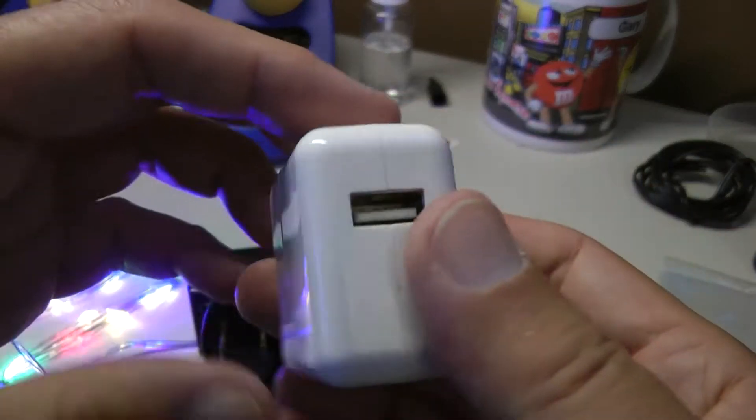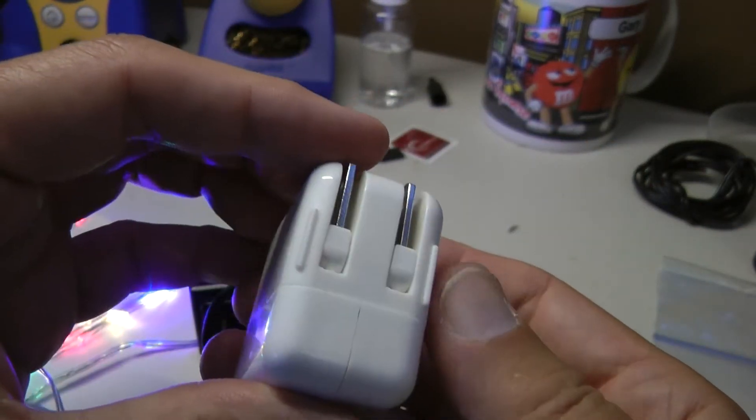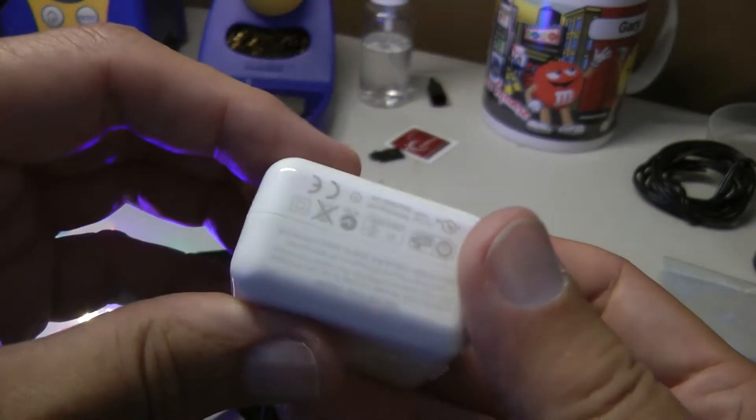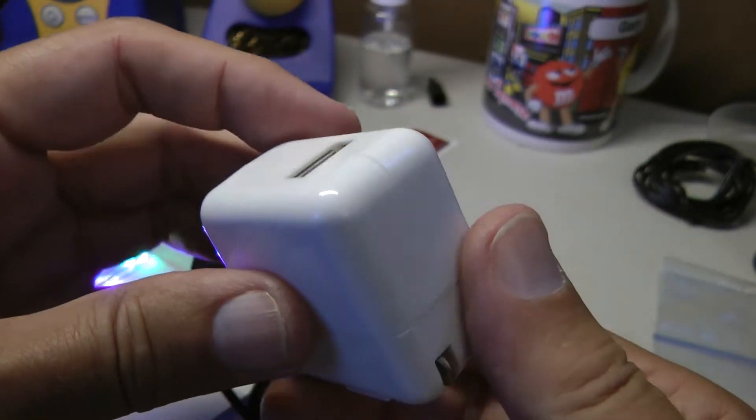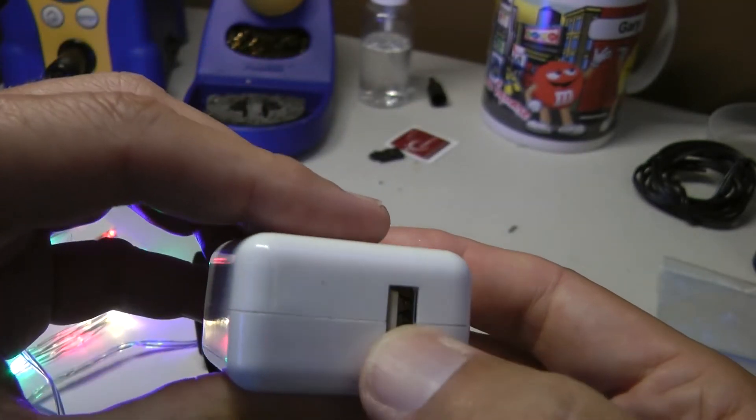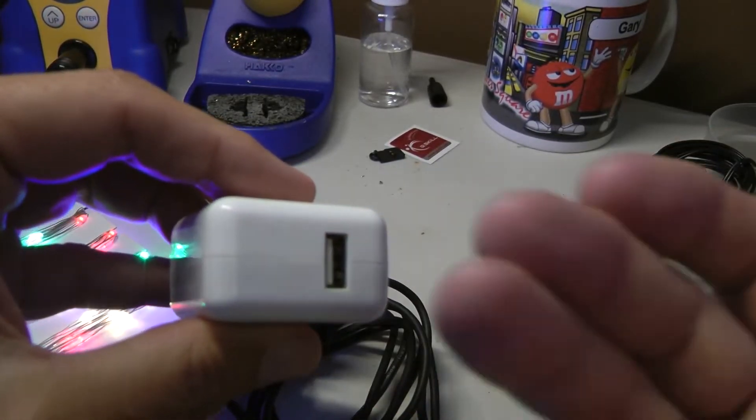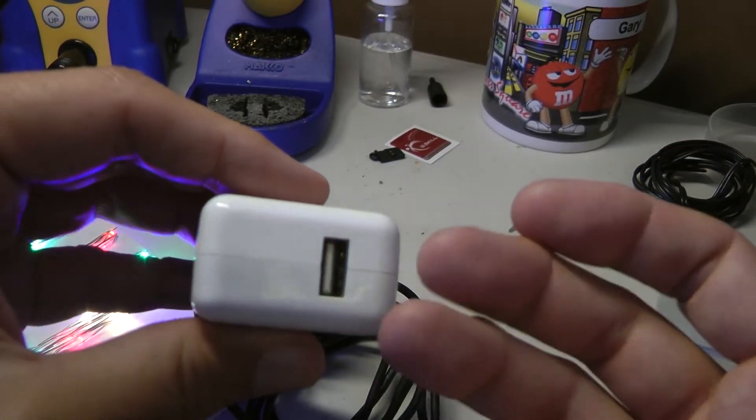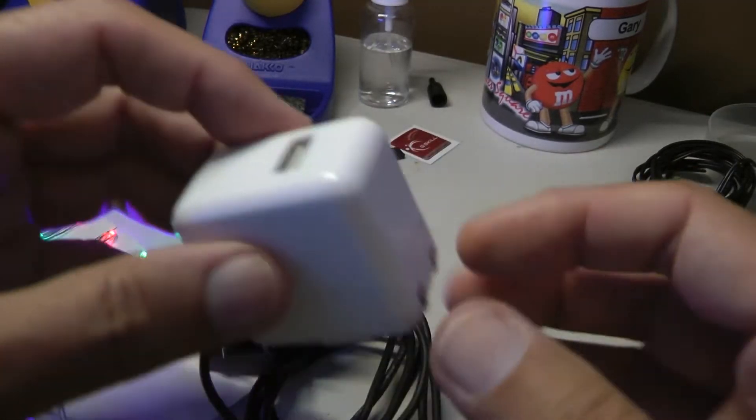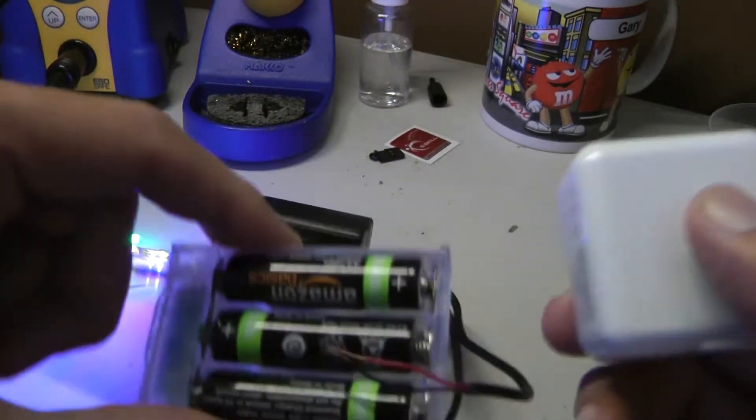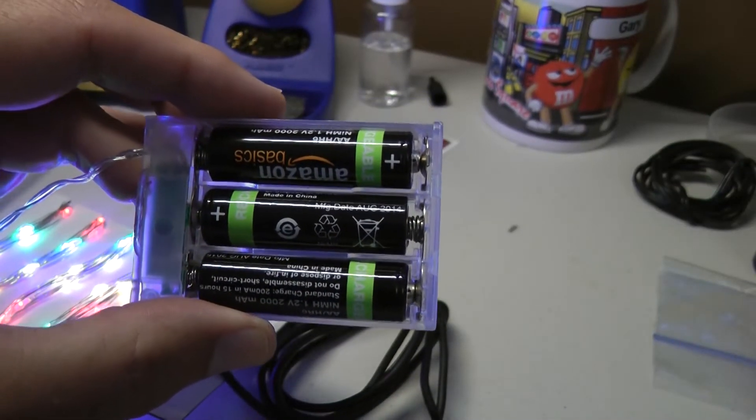And it doesn't have to be this kind of a charger. It could be one of the old iPod chargers. This would need a USB cable. But if you have a spare USB cable, you could plug it in there, cut the other end off, and then I'm going to show you how to solder that end to this little box here.